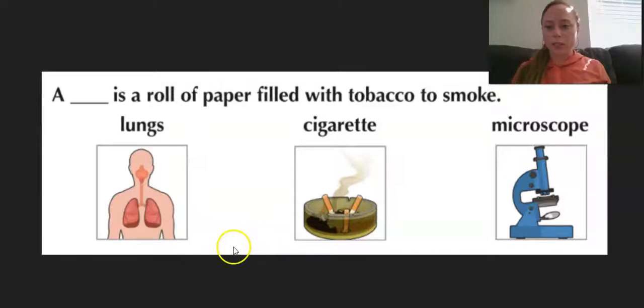Next question is, a blank is a roll of paper filled with tobacco and smoke. A lungs, cigarette, or microscope. If you said cigarette, you are correct.